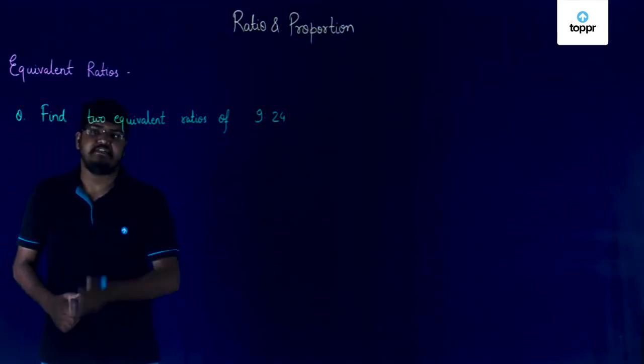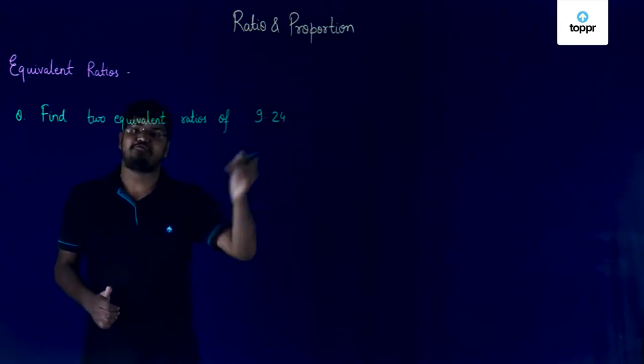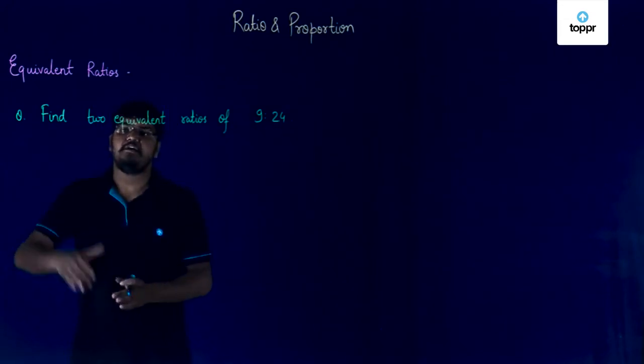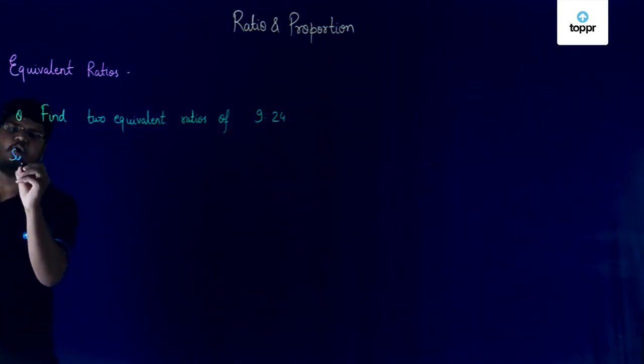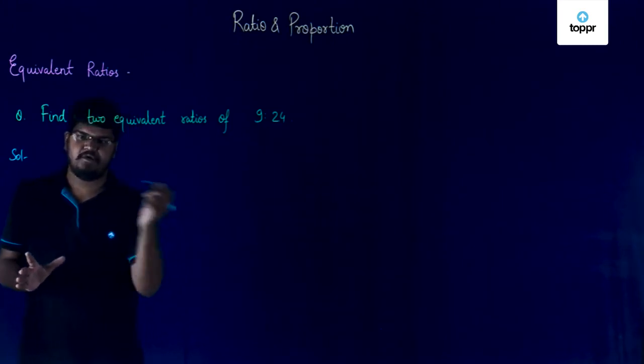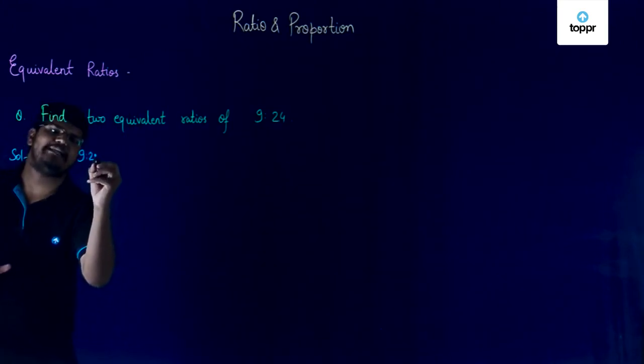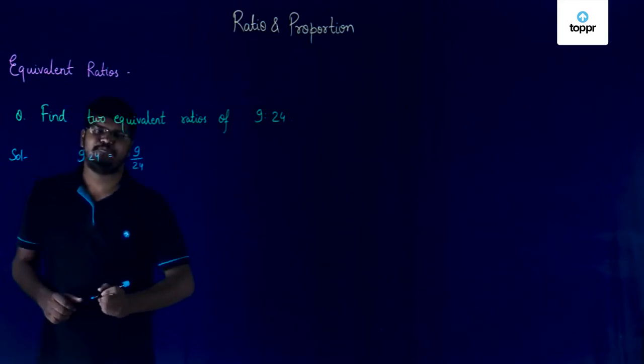Let us take one more question. Find two equivalent ratios of 9 is to 24. Since we have to find two equivalent ratios of 9 is to 24, all we have to do is to first convert this ratio in its fractional form. We know that 9 is to 24 is actually equal to 9 by 24.